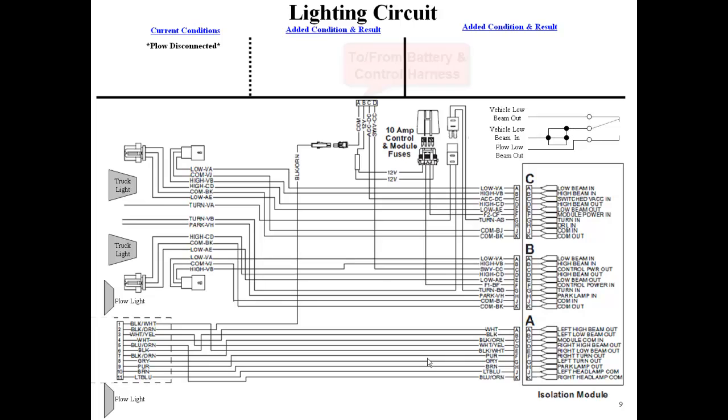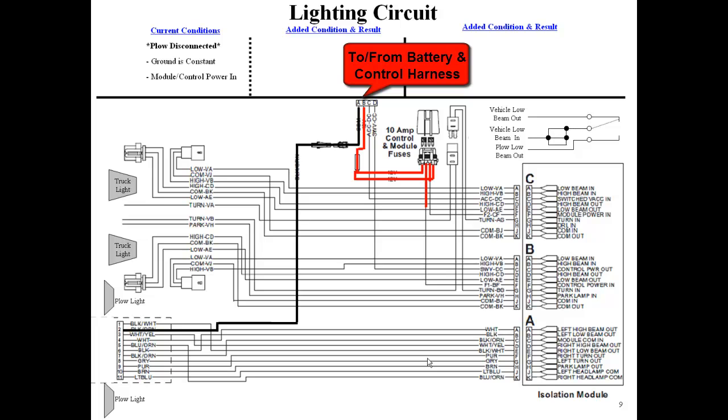The plow is currently disconnected. Ground from the battery runs to the 11-pin lighting harness on the black-orange wire. 12 volts from the battery runs to the F1 and F2 fuses, which provides power to the control power in and module power in circuits of the isolation module.